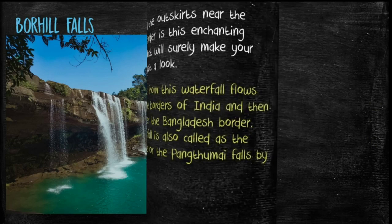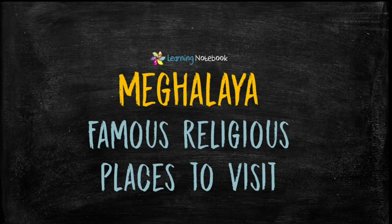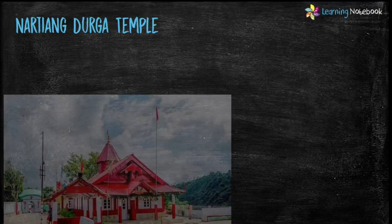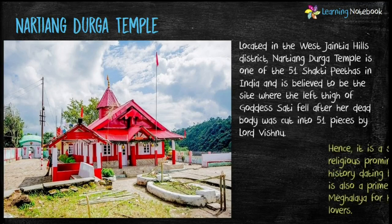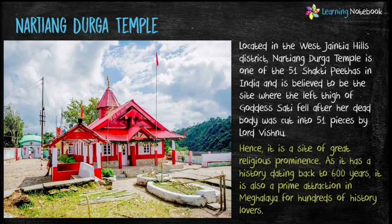Now let's learn about famous religious places to visit in Meghalaya. The first religious place is Nartiang Durga Temple, located in the West Jaintia Hills District. It is one of the 51 Shakti Peeths in India. It is believed to be the site where the left thigh of Goddess Sati fell after her dead body was cut into 51 pieces by Lord Vishnu.